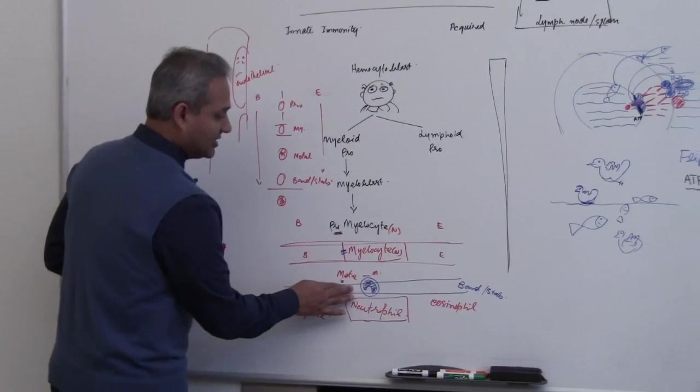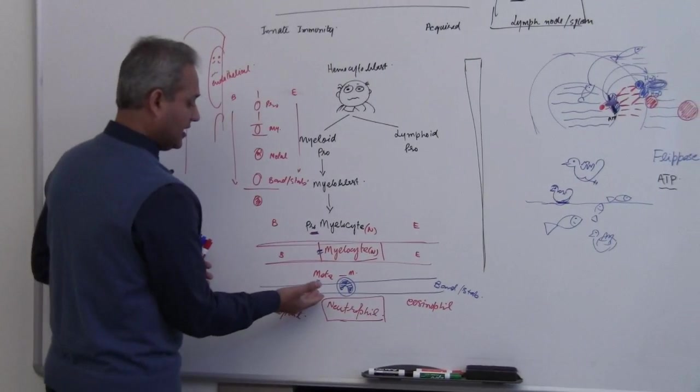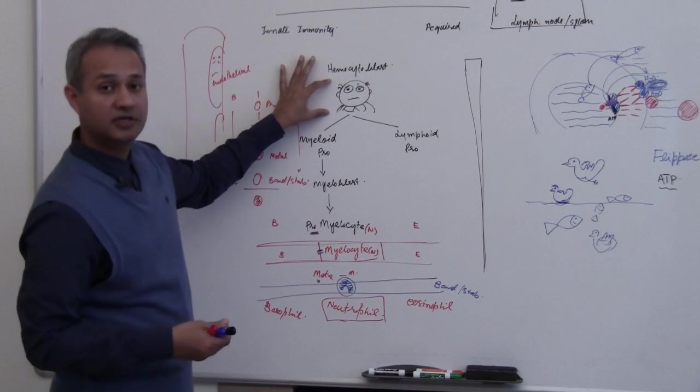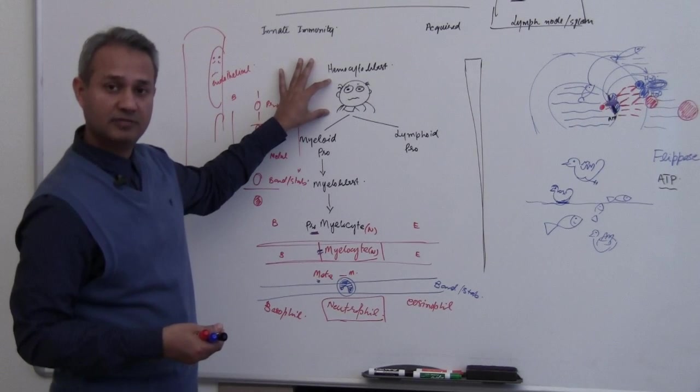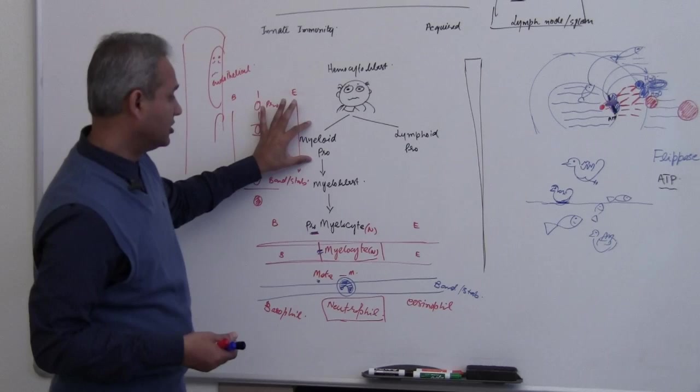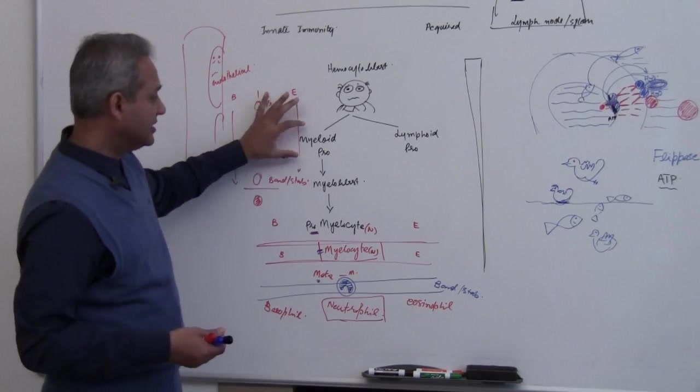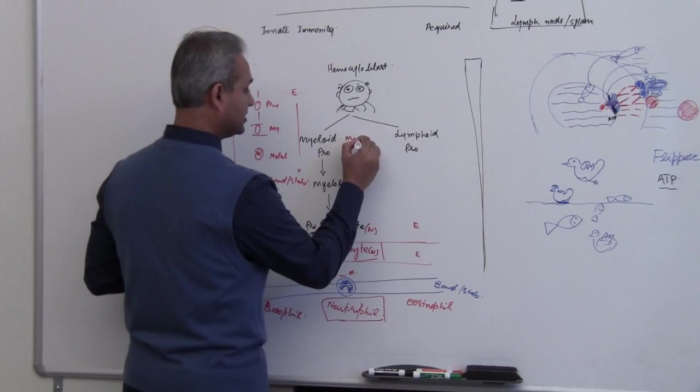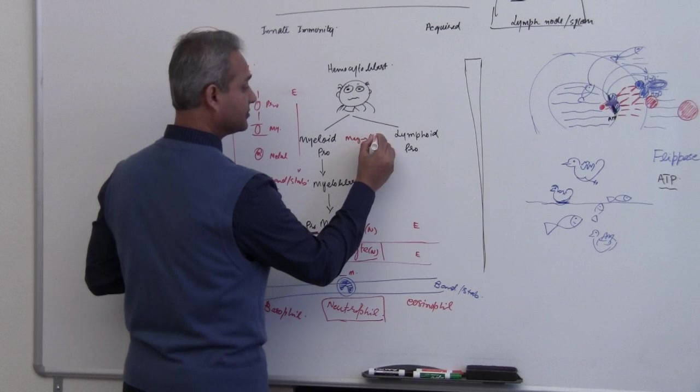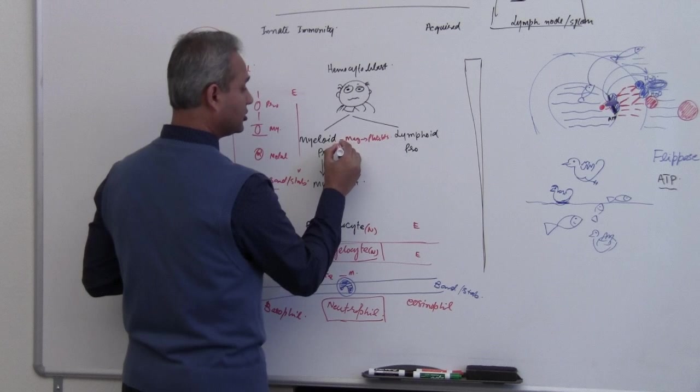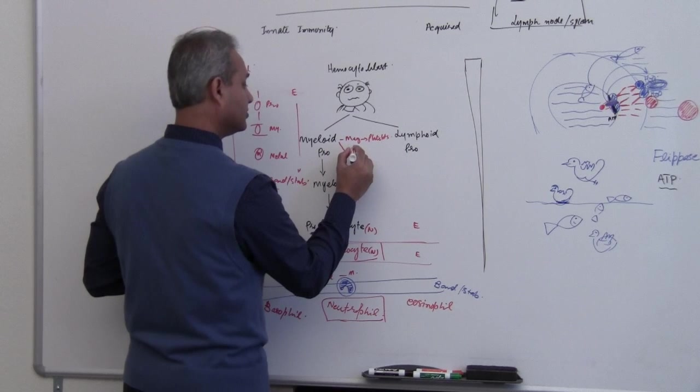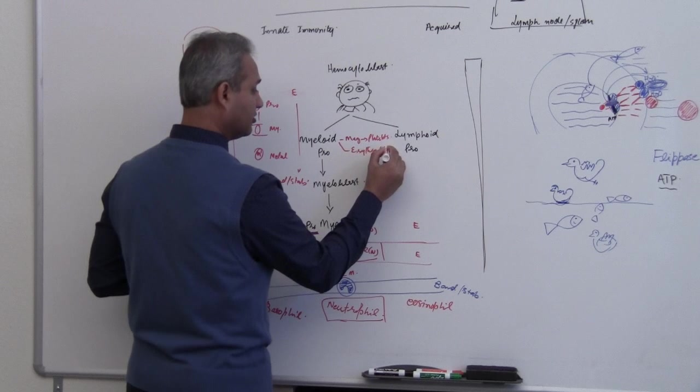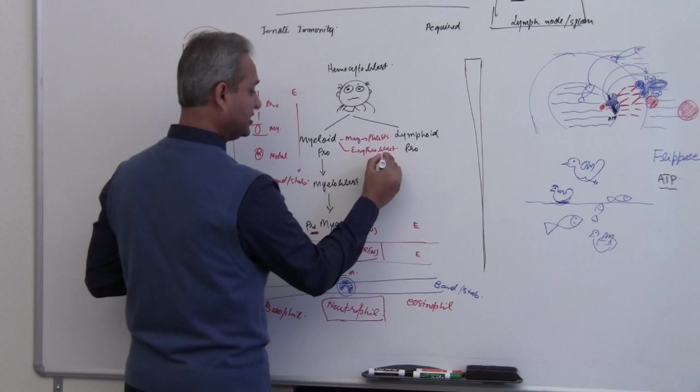So remember the band cells or stab cells. We have the stem cell, primary stem cell for the bone marrow. Then we have gotten the myeloid progenitor. This cell would make megakaryocytes which would give rise to platelets. It would also make erythroblasts or red blood cell lineage.